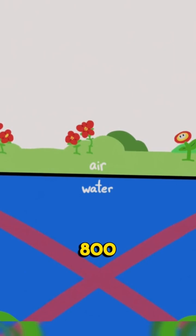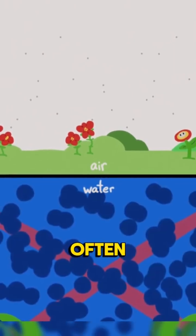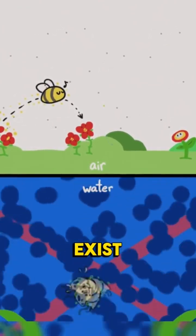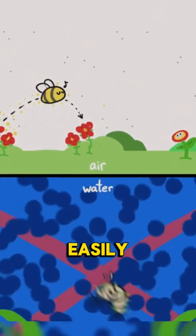Seawater is almost 800 times denser than air, and it's often in motion. It didn't seem like animals small enough to pollinate the tiny flowers that exist underwater would be able to move easily between them.